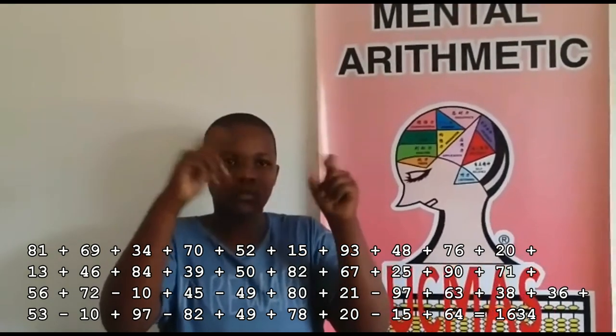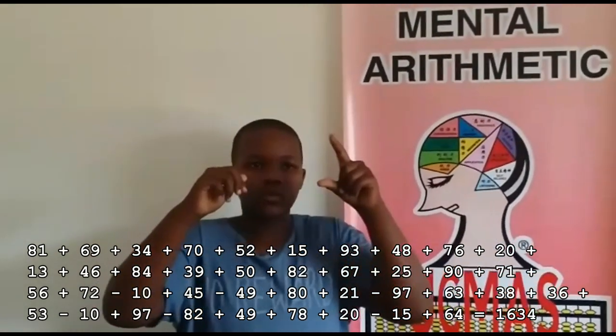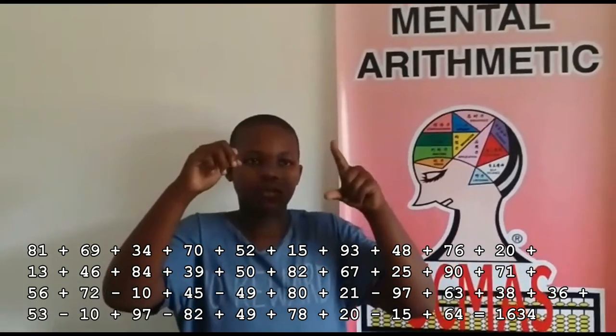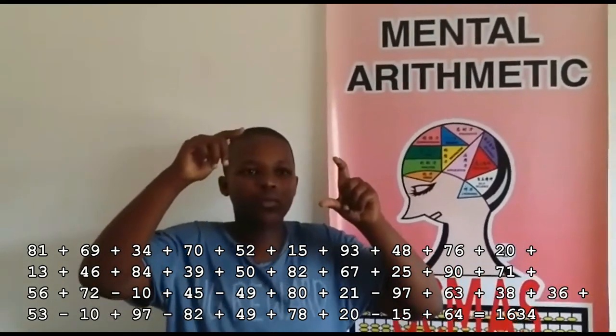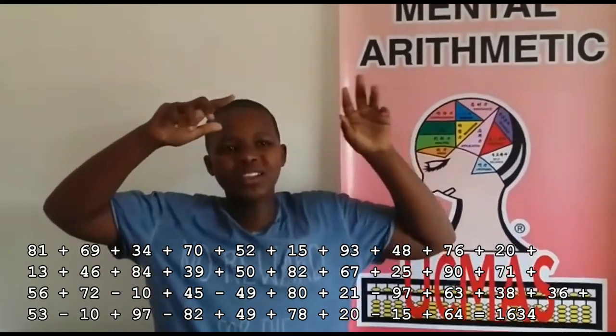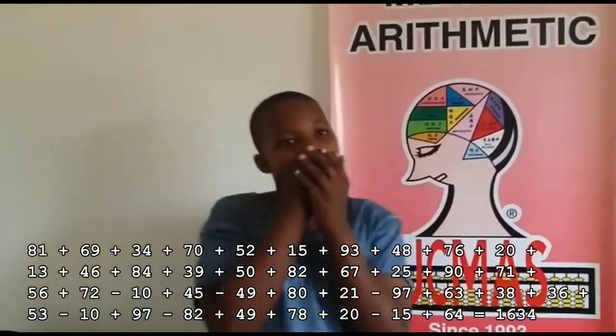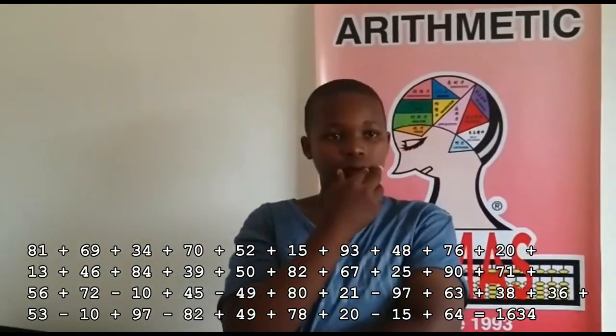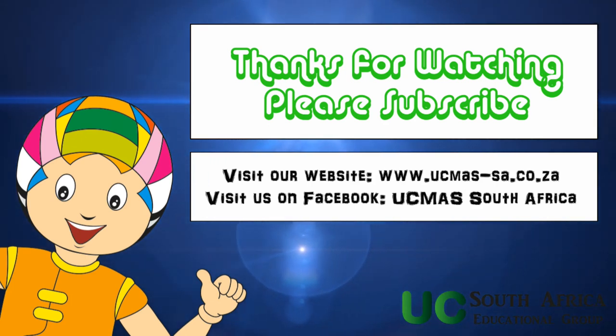97 minus 82 plus 49, 78, 20 minus 15 plus 64. That is 1634. 1634. That's correct.